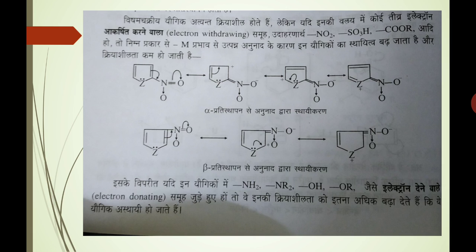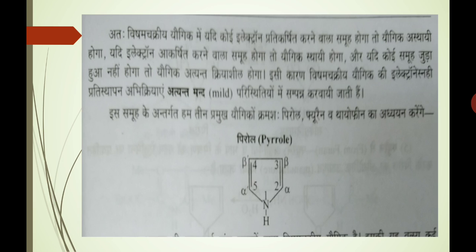Iske vipareet in yogikon mein koi electron-donating group juda hua ho, for example NH2, OH, OR aadi groups — ye electrons ko ring mein pradaan karenge to phir inki kriyashilata itni zyada badh jaati hai ki ye yogic bahut hi zyada asthayi ho jaate hain ya unstable ho jaate hain. Ataev, heterocyclic compounds mein yadi koi electron-repelling group hai to yogic asthayi hoga; yadi electron-withdrawing group upasthit hai to yogic sthayi ho jaayega; aur yadi koi samooh jura hua nahi ho to yogic atyant kriyasheel hoga. Isi kaaran se heterocyclic compounds ki electrophilic substitution reactions atyant mild conditions mein karwani padti hain.